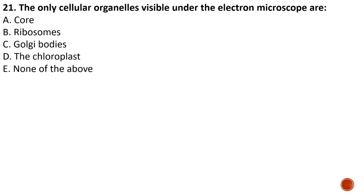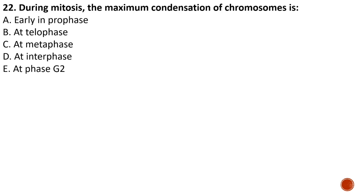Question number twenty-one: the cellular organelles visible under the electron microscope include the Golgi apparatus and ribosomes. Although the instructions say choose one answer, this question has more than one correct answer — both ribosomes and the Golgi body are visible under the electron microscope. Question number twenty-two: during mitosis, the maximum condensation of chromosomes occurs at metaphase, the phase where chromosomes align at the center or equator of the cell.